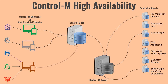Now let's say Control M EM is working as usual but Control M Server is down. In that case, users will be able to interact with Control M EM, but Control M EM will not be able to interact with Control M Server. Since Control M EM doesn't do any processing — it just requests to Control M Server — users will not be able to execute or manage any jobs. So Control M Server can also be a single point of failure.